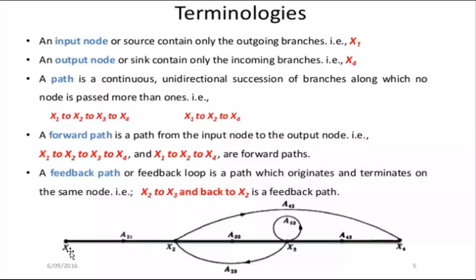Here are some terminologies of the signal flow graph. x1 is the input node, also called the source. The input node only contains outgoing branches — there are no incoming branches. x4 is the output node, also called the sink. It contains only incoming branches and there is no outgoing branch. The forward path connects the input node to the output node — for example, x1 to x2 to x3 to x4 is one path, and x1 to x2 directly bypassing to x4 is another path.